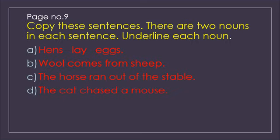Now come towards page number 9. Copy these sentences — there are two nouns in each sentence, underline each noun. The first one is: hens lay eggs. As I told you before, all animals and birds are nouns. So hens is a noun and eggs is a noun — the two nouns are hens and eggs. The next sentence is: wool comes from sheep. Wool is a thing and sheep is an animal, so we underline wool and sheep.